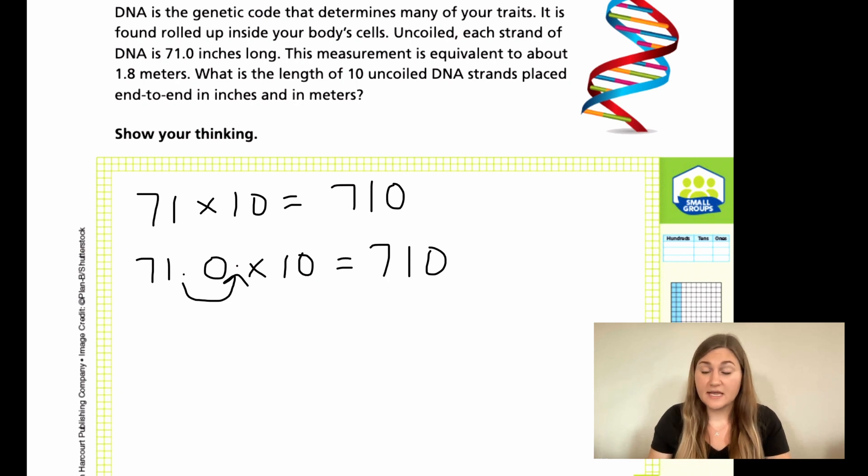In multiplying, we want them to be bigger. So we're going to use that for the same with the meters. So that's going to be 710 inches. Now with the meters, we have 1.8. And again, we're multiplying that by 10. Because there's only one zero, we're going to move it one time.